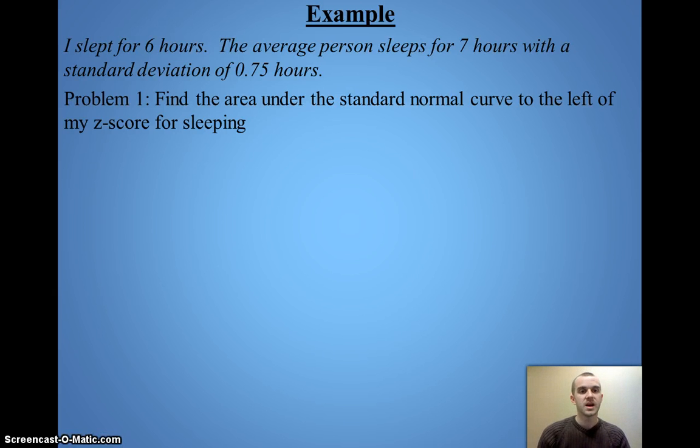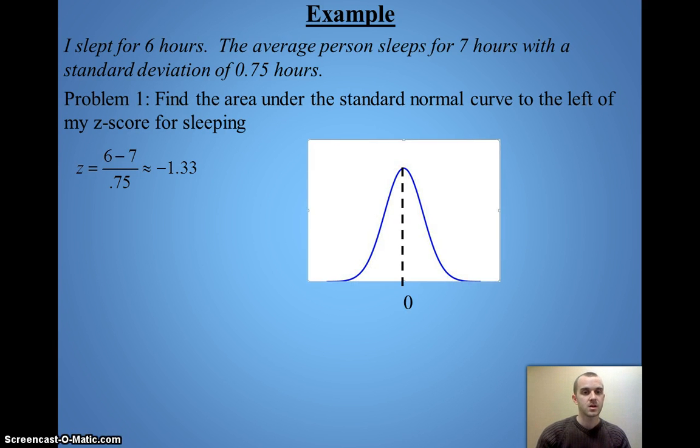So, let's look at the examples. Say I've got six hours of sleep, and the average person gets seven, and the standard deviation is 0.75. Start with my z-score, and I get about negative 1.33. I can graph that now. Start with zero in the center, negative 1.33 to the left, and I will be shading to the left, because that's the problem they want me to do.